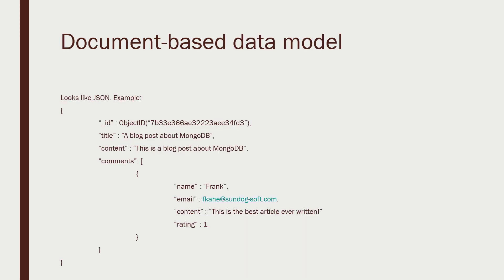The big thing that's different about MongoDB is that you can stick pretty much anything you want into it. Basically, any JSON blob of data you can shove into a document. In MongoDB, it doesn't have to be structured. You don't have to have the same schema across each document. You can put whatever you want in there. Here's an example of what an actual MongoDB document might look like — let's say we want to store a blog post.